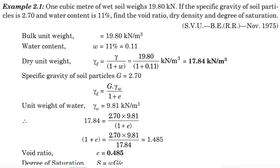So 19.80 divided by 1 plus 0.11 kN per meter cube. Solving this, we get 17.84 kN per meter cube.